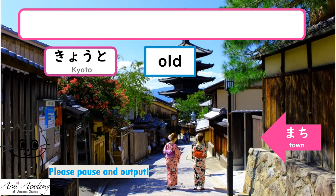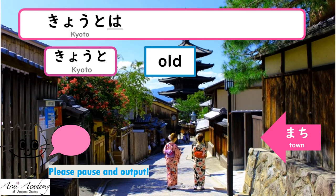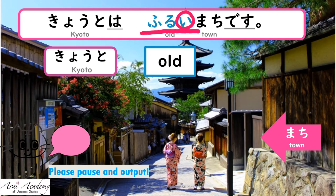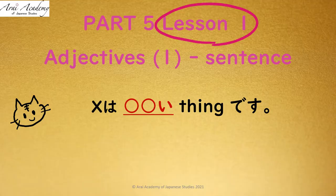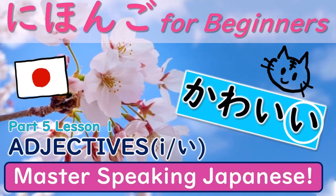From Part 5, Lesson 1, you can say, 'Kyoto is an old town.' Yes — Kyoto wa furui machi desu. Furui modifies the following word, machi. Good start! We studied adjectives ending with i plus thing in Part 5, Lesson 1.